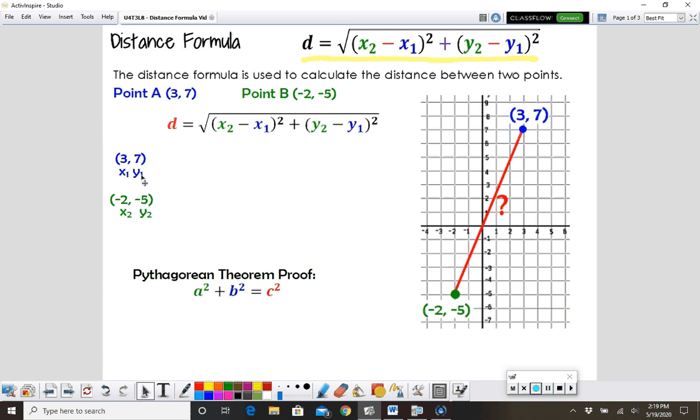Write down your ordered pairs, label them x1, y1, x2, y2, and then all you need to do is plug them into the formula in the right places.